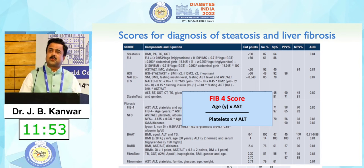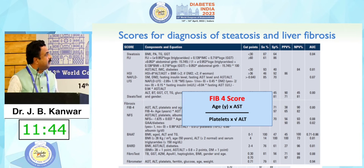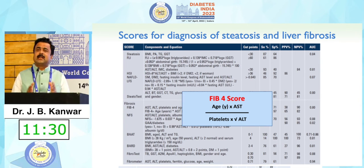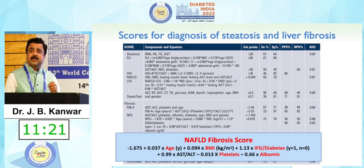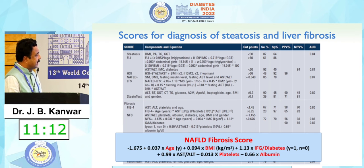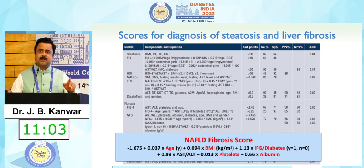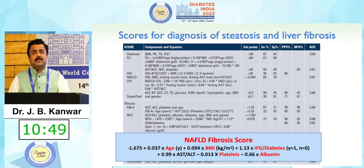Coming to fibrosis scores, the two commonly used scoring systems are FIB-4 and NFS. FIB-4 is very simple — you input AST, platelet count, and ALT level. If the FIB-4 score is less than 1.35, you rule out significant fibrosis. If it is more than 2.67, you are probably dealing with steatohepatitis or fibrosis. The NAFLD Fibrosis Score (NFS) is validated with liver biopsy. Using parameters like age, BMI, platelet count, and albumin: if NFS is less than minus 1.45, you can rule out fibrosis; if more than 0.67, there is a 90% positive predictive value for advanced fibrosis.